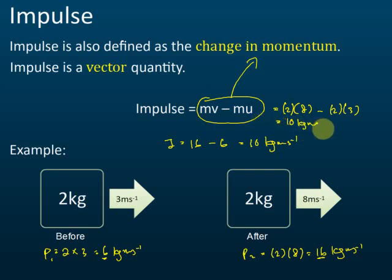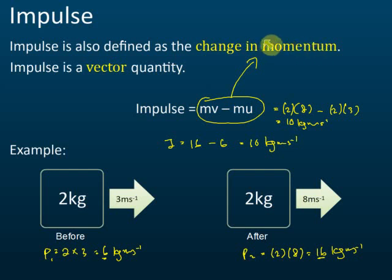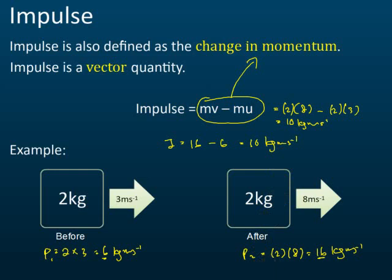So impulse is also defined as a change in momentum — mv minus mu. We have two formulas for impulse: Ft, or mv minus mu. That is impulse.